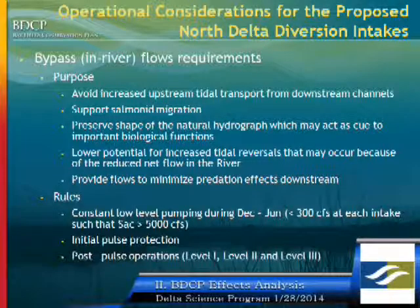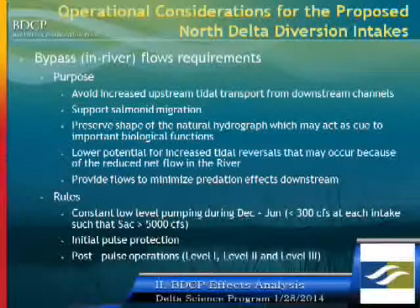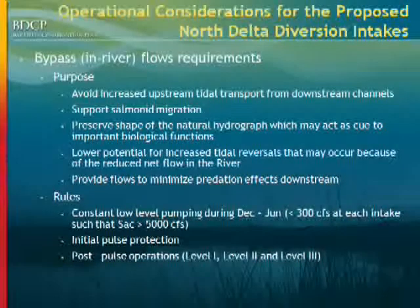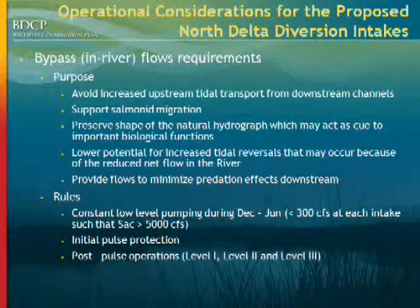The flows are also expected to help minimize the predation effects at the intakes and downstream locations. In general, the rules are broken into three different parts. One is there is an initial pulse protection where the intakes are primarily operating at what we call constant low-level pumping, which is generally during the December through June period. Under this rule, at each intake, we could divert only up to 300 CFS such that the Sacramento River flow never goes below 5,000 CFS.